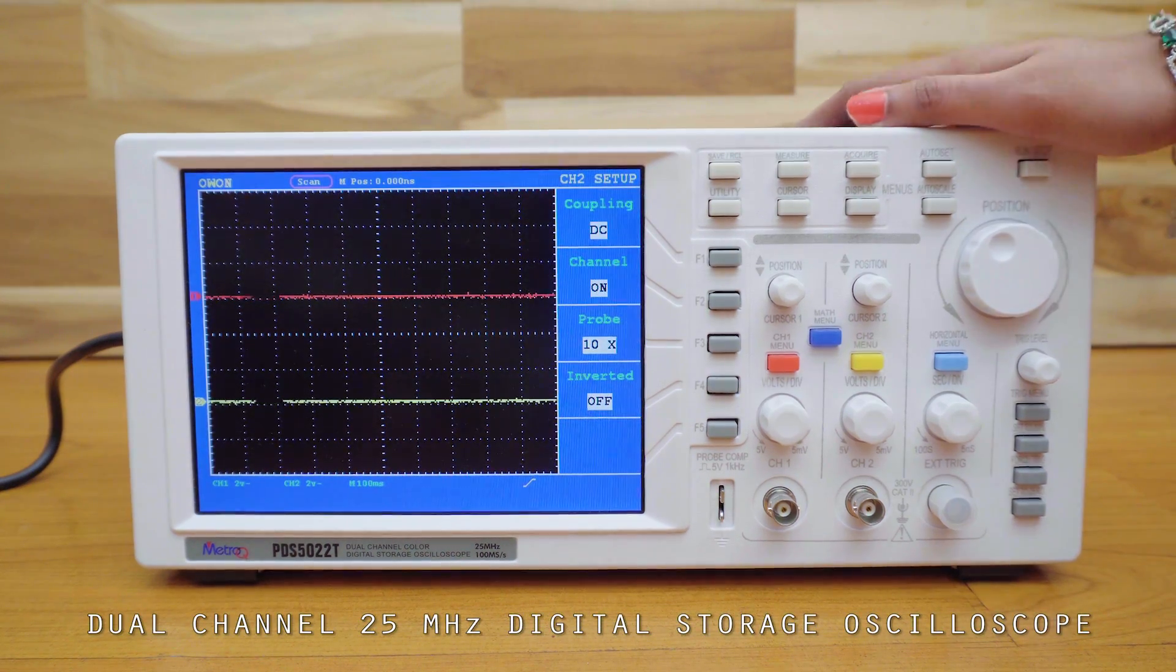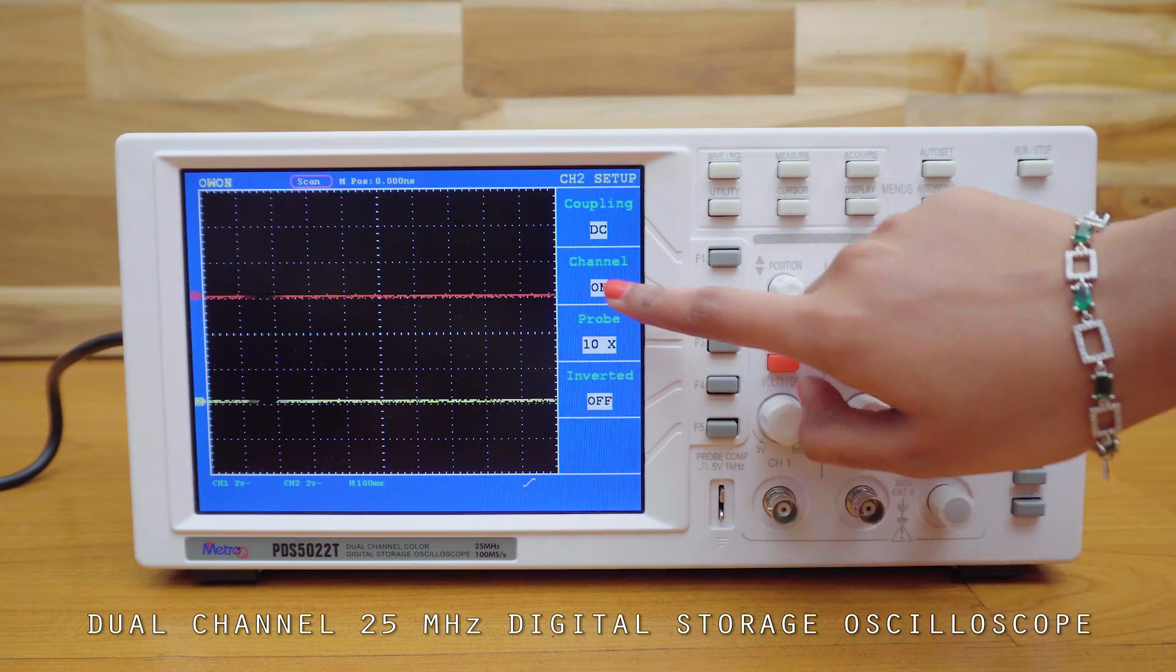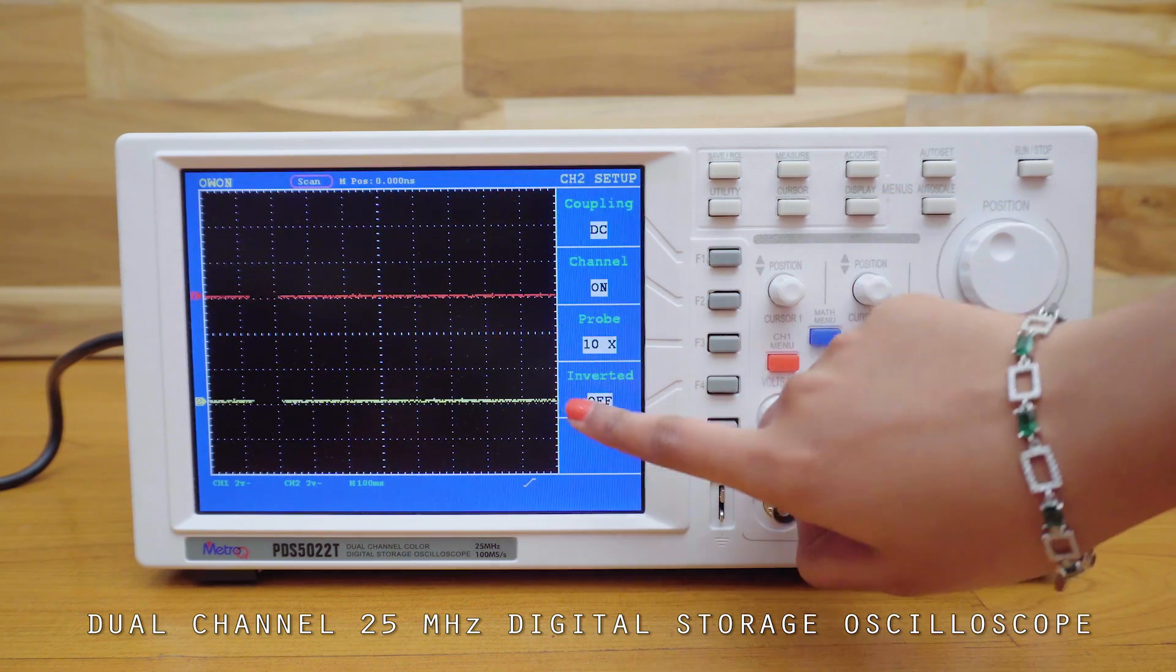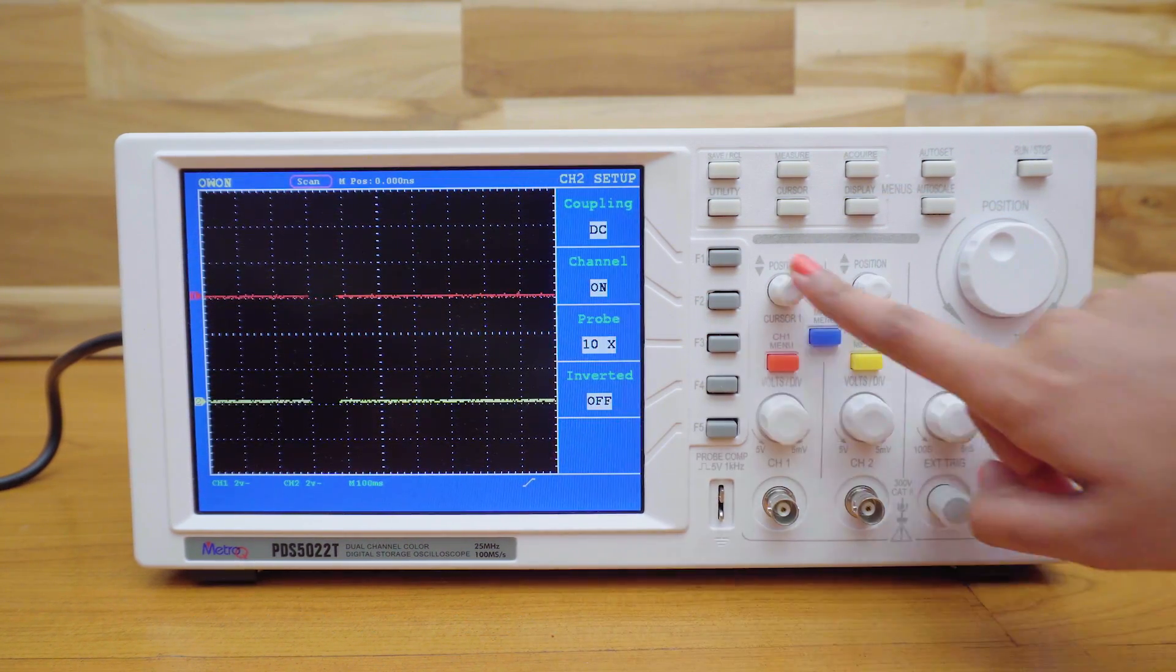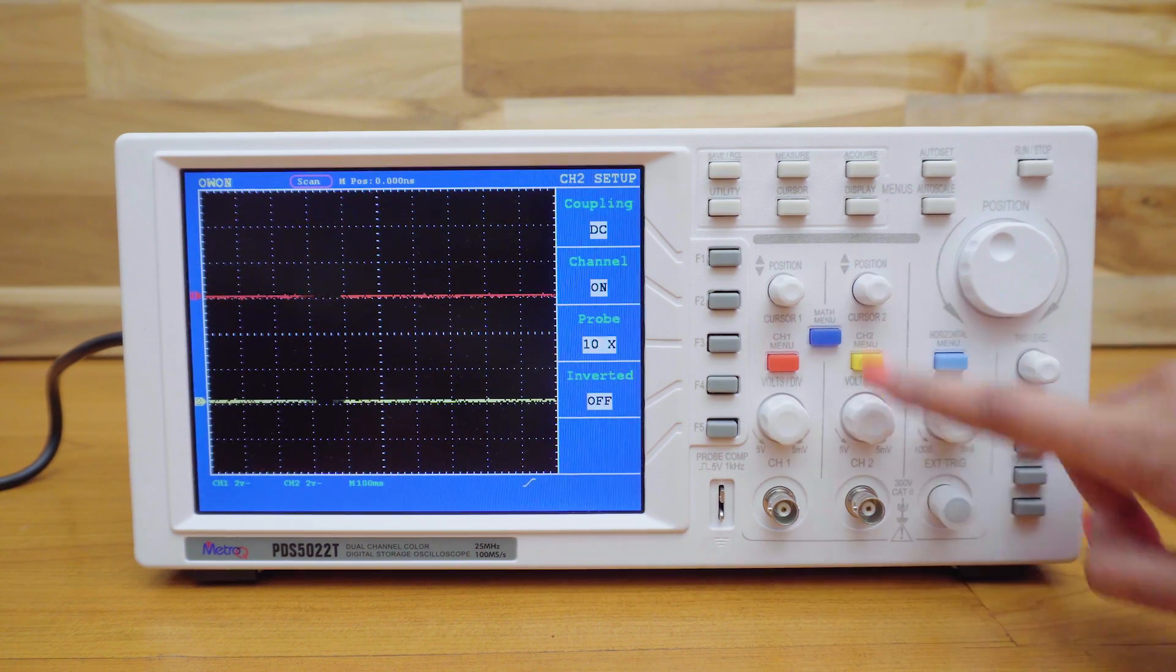In this video, I'll be using a dual channel DSO. It has two channels, channel 1 is in red and the channel 2 is in yellow. Here's the channel 1 menu and this one's for channel 2.